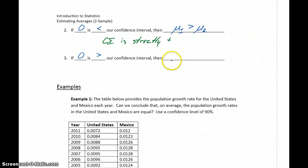And if zero is larger than our confidence interval, we conclude that the first parameter is the smaller of the two. That would be the same thing as coming up with a confidence interval that's strictly negative. So if all values in our confidence interval are negative, that's going to imply that μ₁ is less than μ₂, or M₁ is less than M₂.